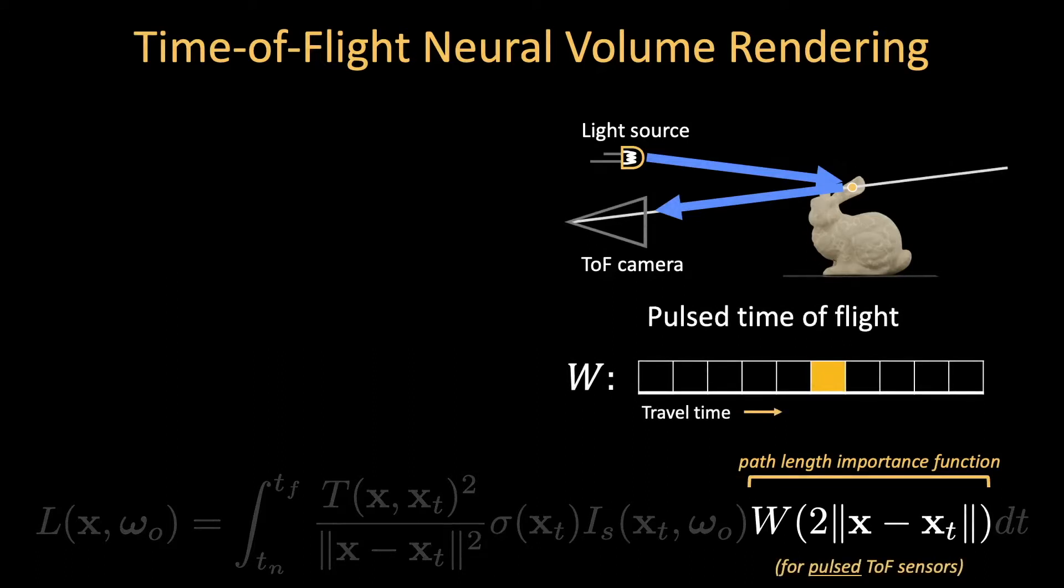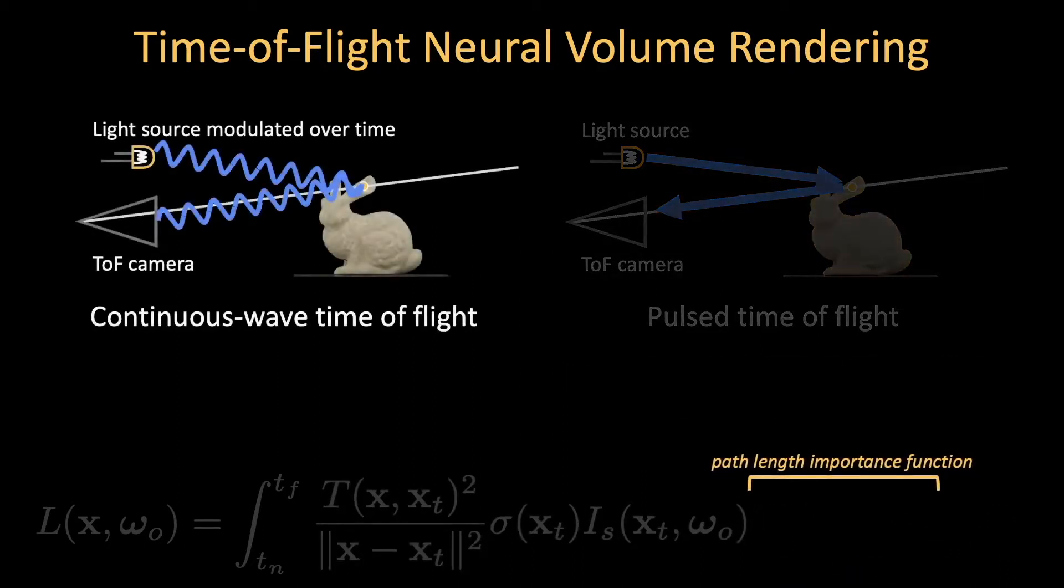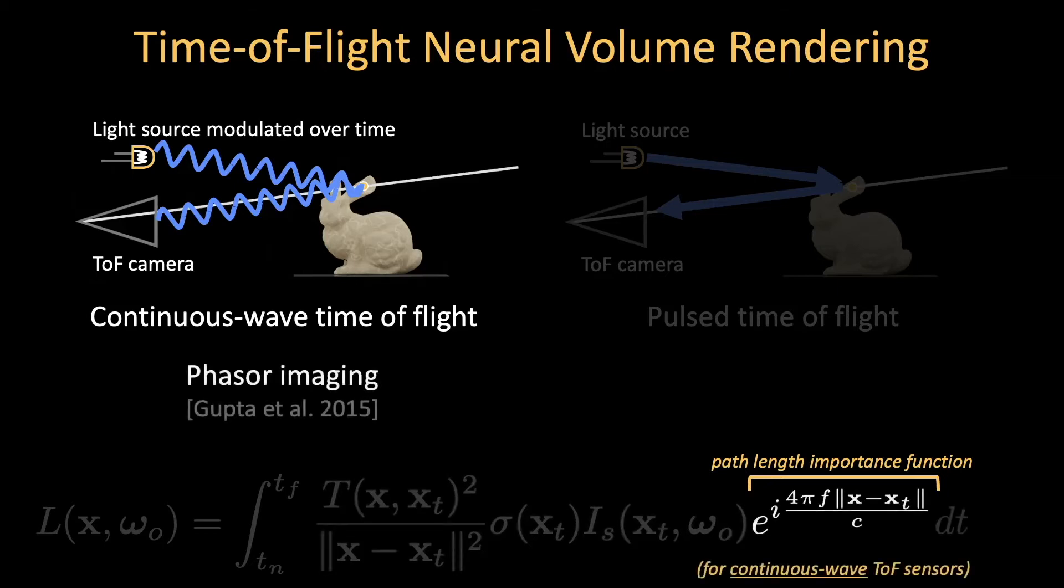For pulsed time-of-flight like LIDAR, w can be described by a one-hot vector that denotes the return time. A second kind of time-of-flight is continuous wave time-of-flight, where an amplitude-modulated light source is correlated with the return signal. For continuous wave time-of-flight sensors, which we leverage in our work, the path length importance is a complex number, or phasor, due to this modulation.